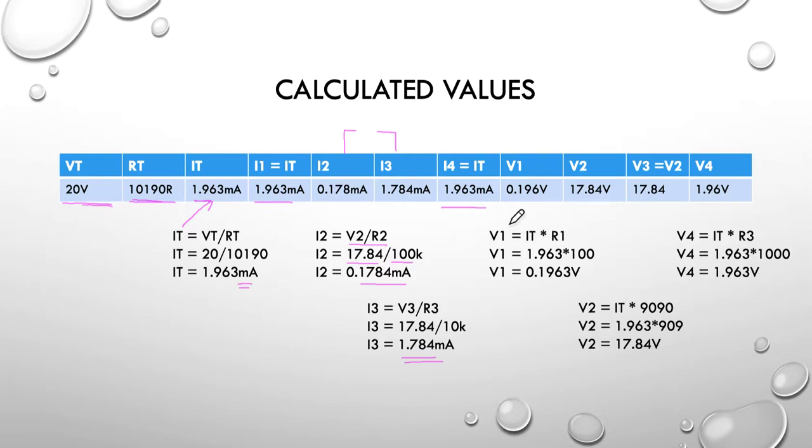Into the voltages: voltage across V1 is 0.196 volts. Volts 2 is 17.84, and volts 2 and 3 are the same because they're in parallel. Finally, our voltage across resistor 4 is 1.96. You can see where I've done the calcs here for each of those things. So there are our calculated values.